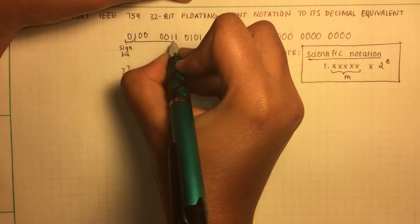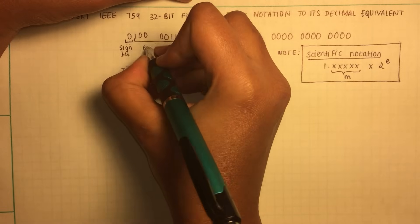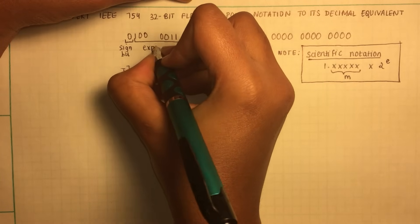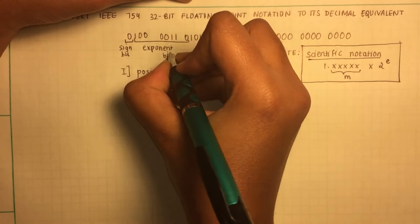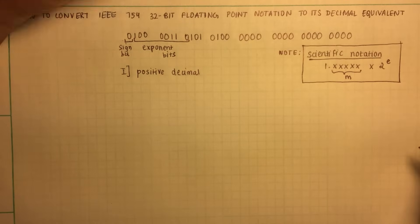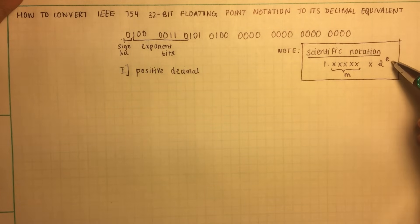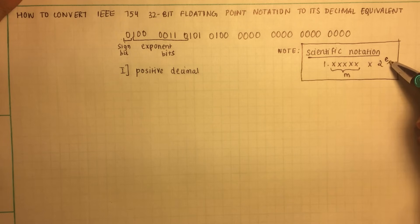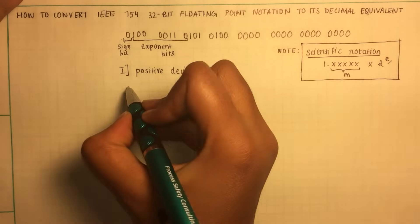The next eight bits are the exponent bits. This gives us the value of the exponent of the number in scientific notation.